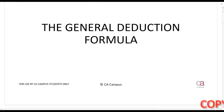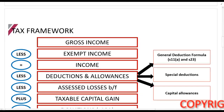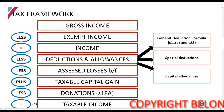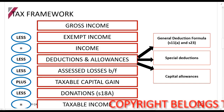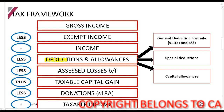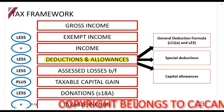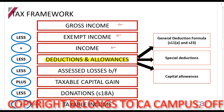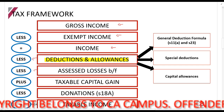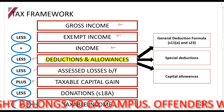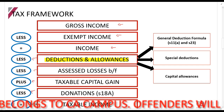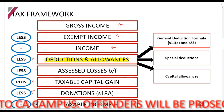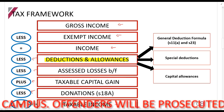Welcome to this lecture on the general deduction formula. Looking at our tax framework, we are currently focusing on deductions and allowances. As a quick reminder: gross income less exempt income gives us income, from which you deduct your deductions, assessed losses, taxable capital gains, and donations paid to a public benefit organization — giving us our taxable income.